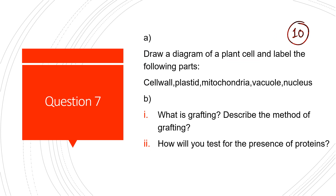Question 7: Draw a diagram of a plant cell and label the following parts: cell wall, plastid, mitochondria, vacuole, and nucleus. Draw the diagram neatly in pencil and label it properly — do not use pens or colors; it should be distinct and clear. Next question: What is grafting, and describe the method of grafting.